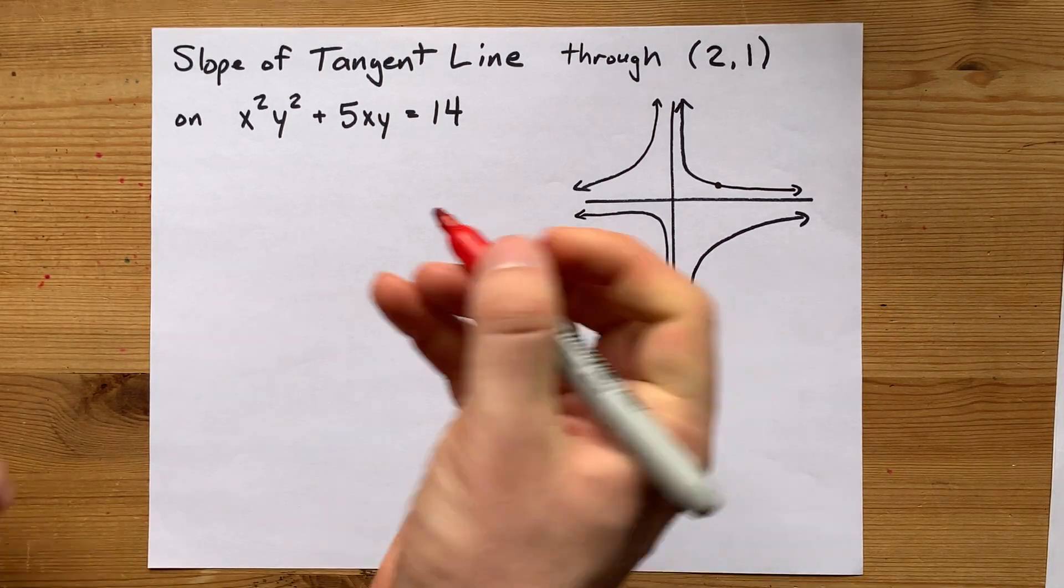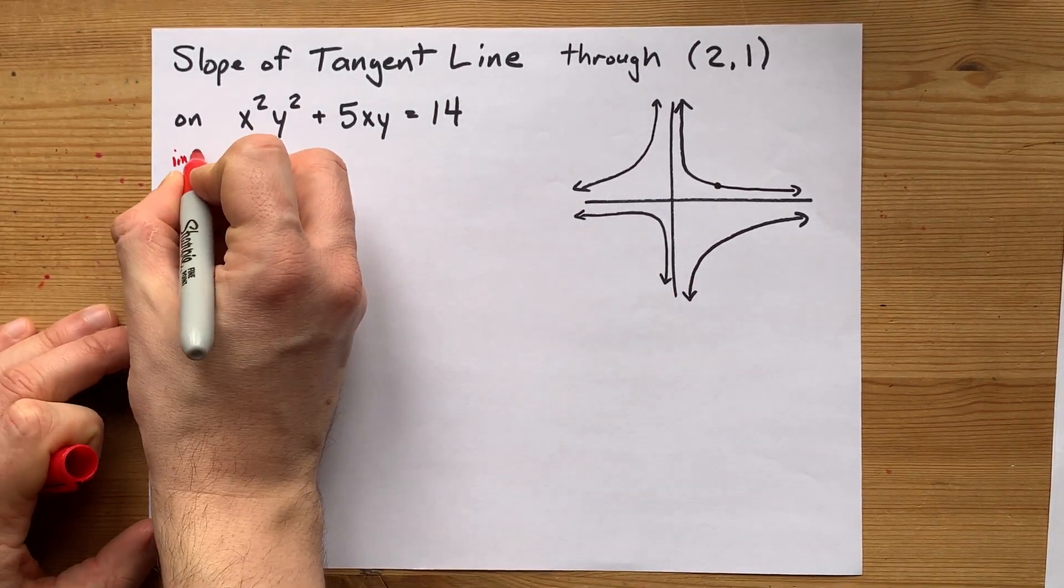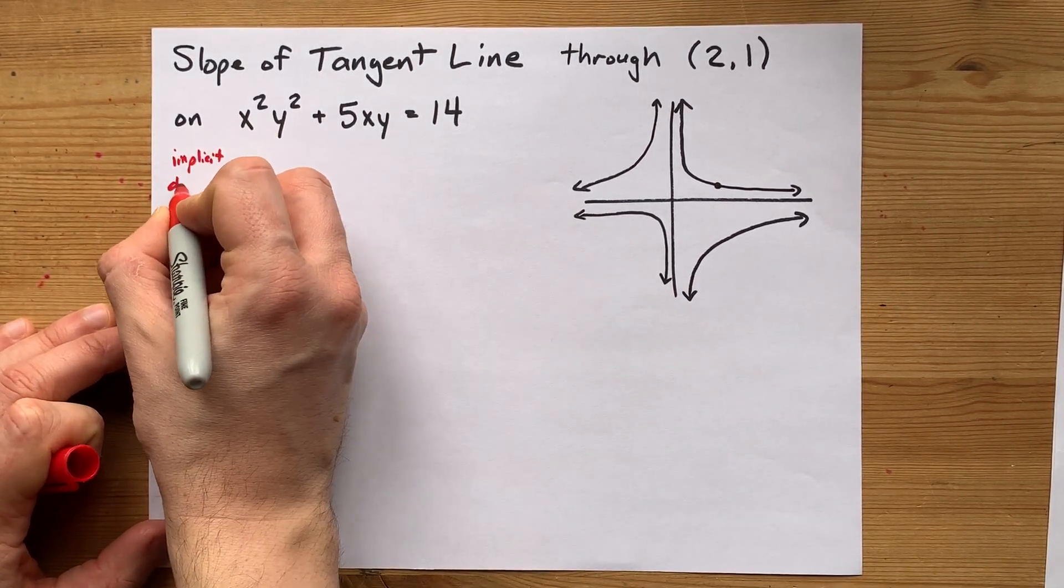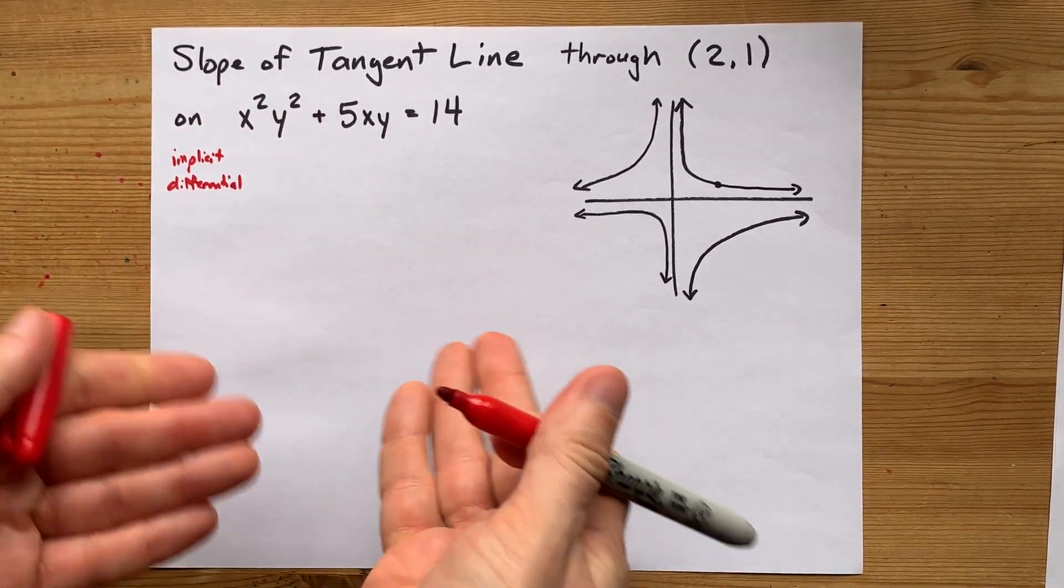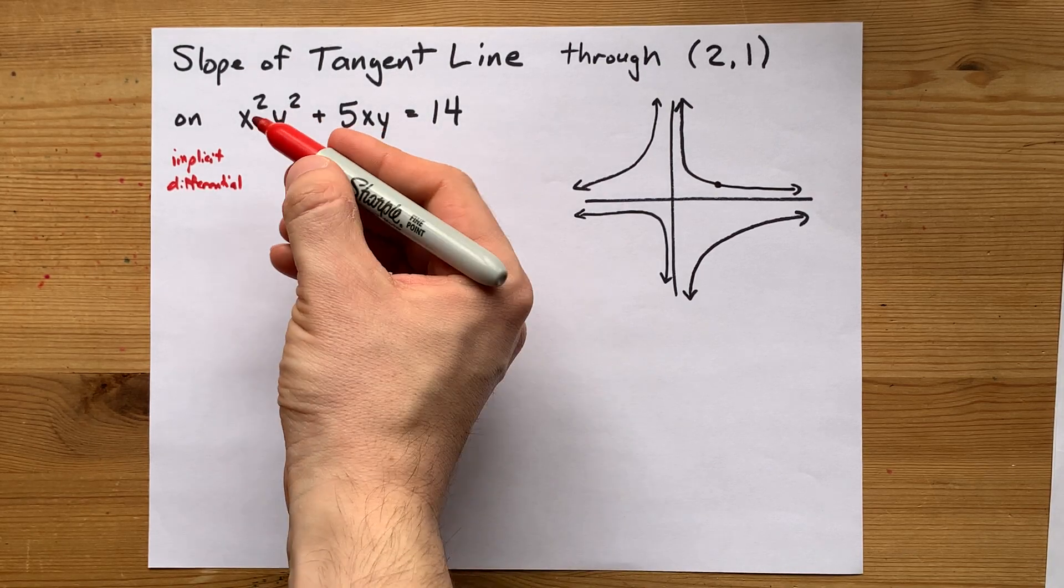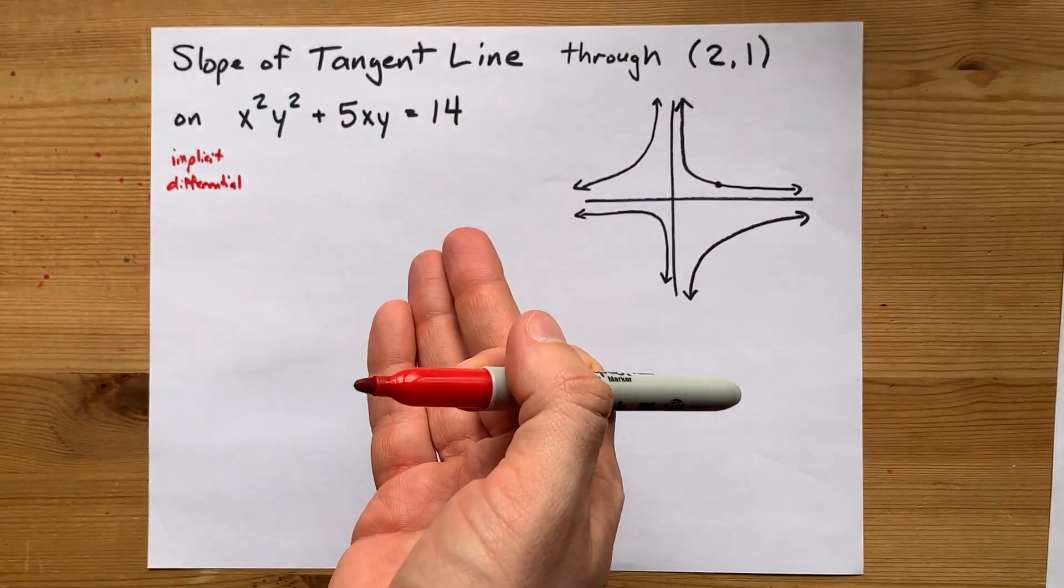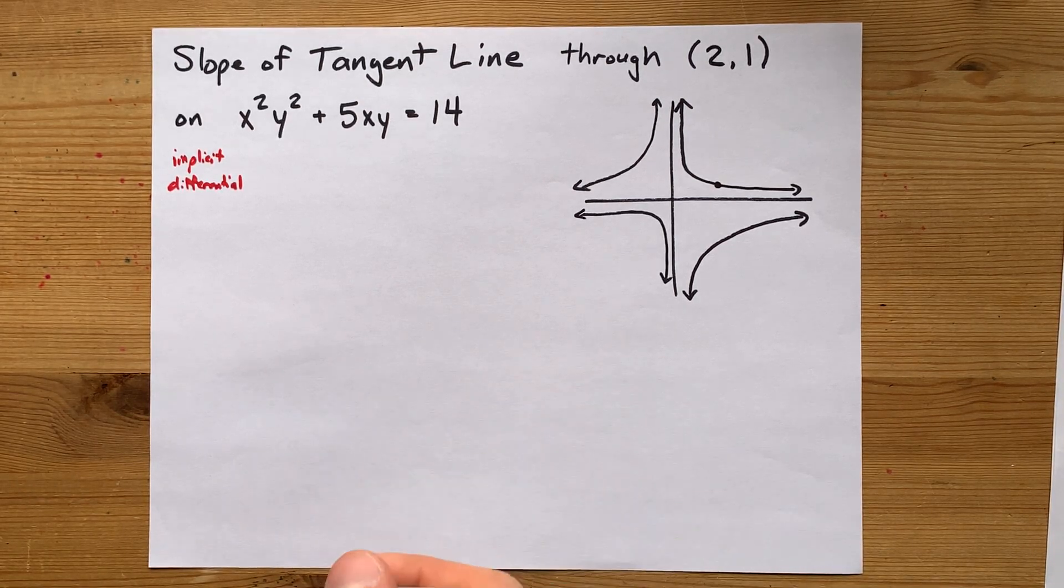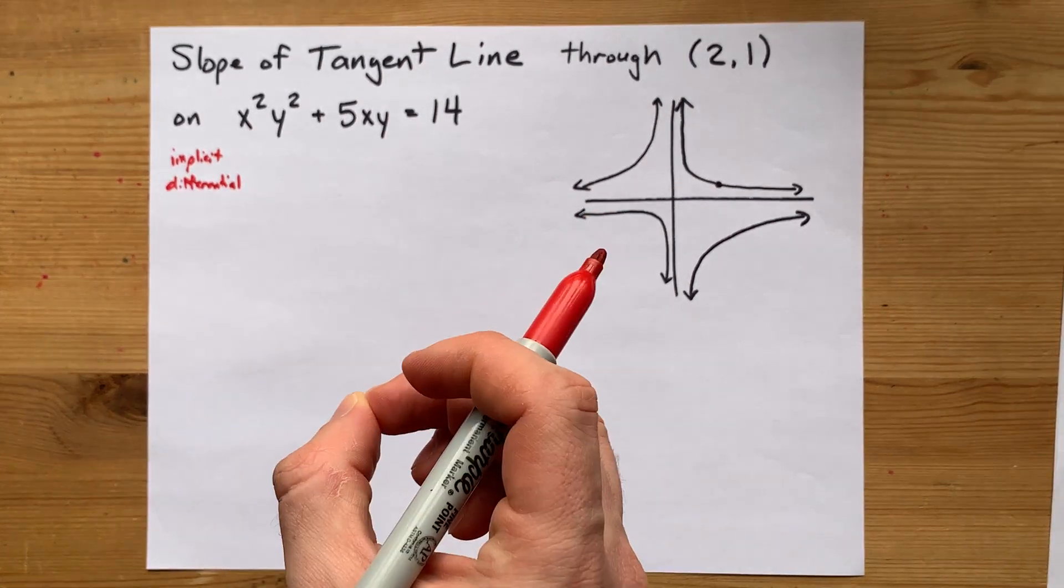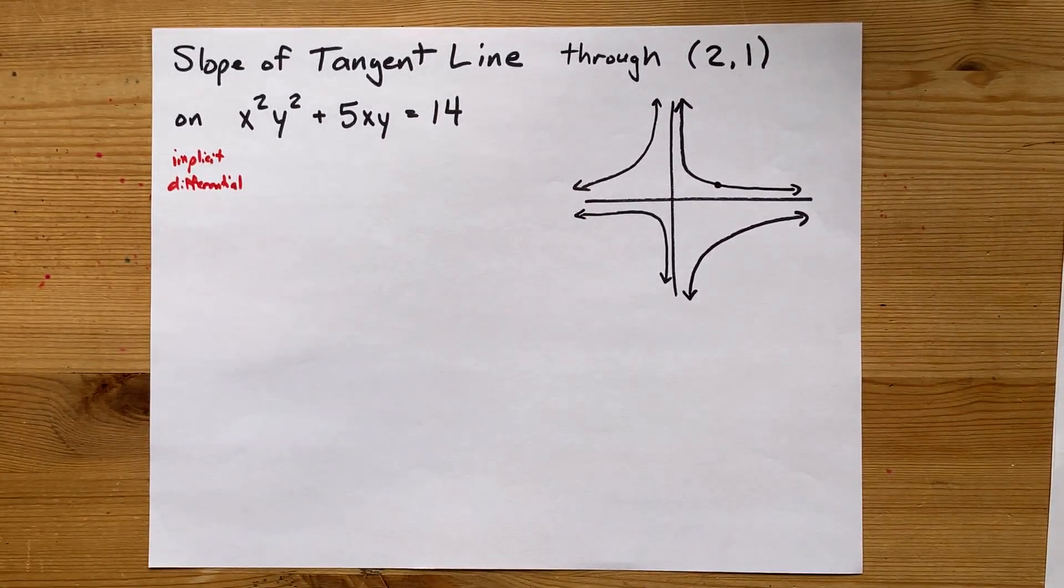Now the way your teacher probably wants you to do this is with something called implicit differentiation, which is using the fact that the chain rule exists and that y has a derivative that you can call either dy by dx or y prime. I'm going to write it as dy by dx in this case, but that's just a formatting thing.